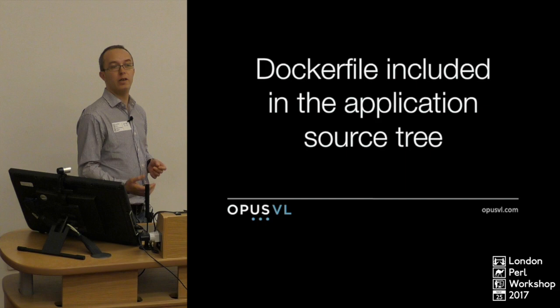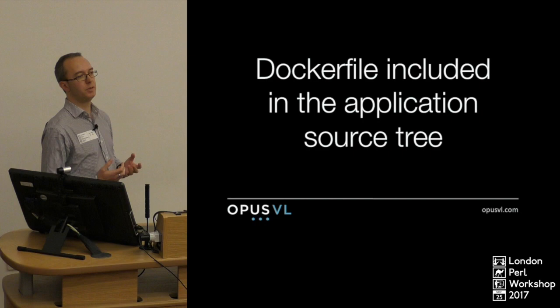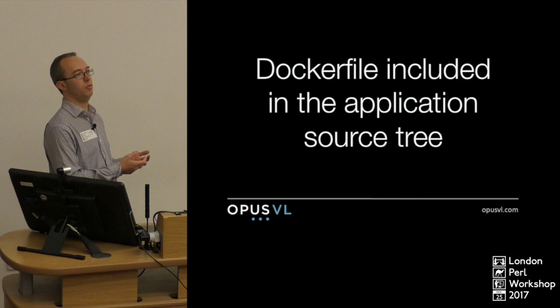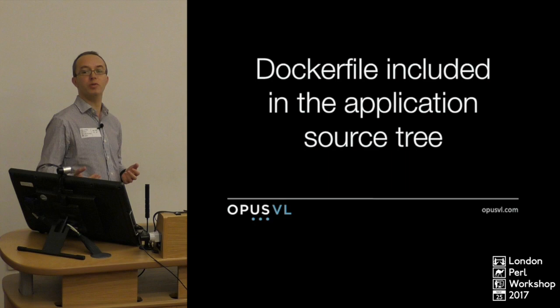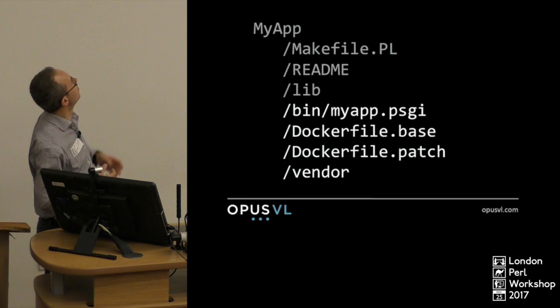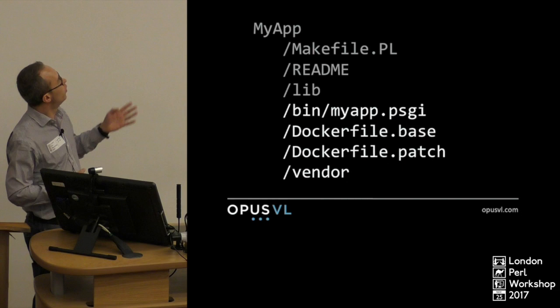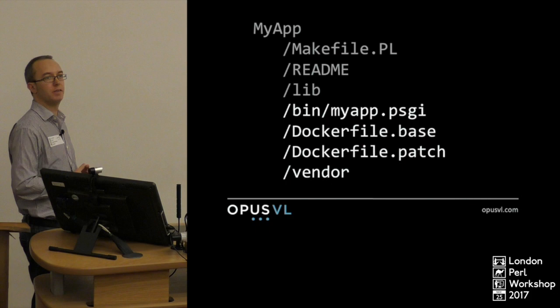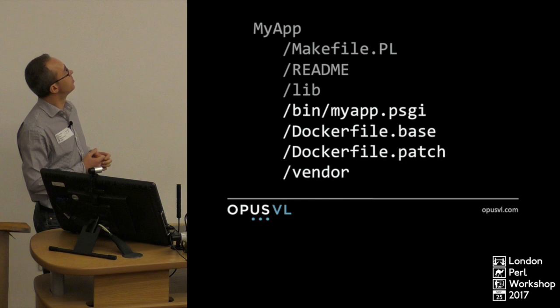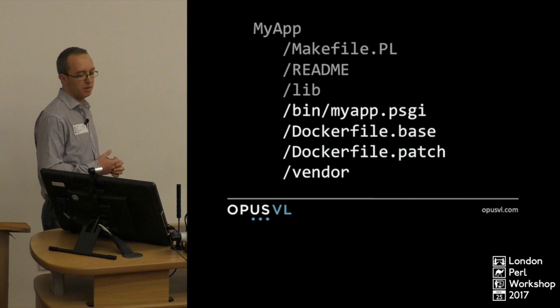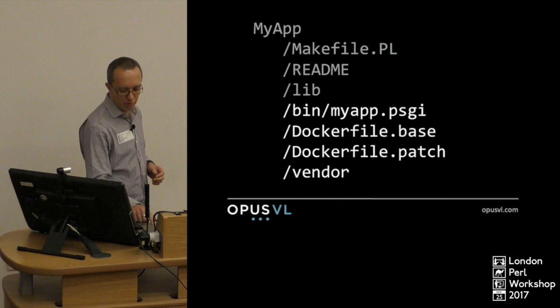Within the application source tree we include a Dockerfile. All our applications are built using a standard CPAN packaging format — we release to an internal local CPAN instance, and open source things go to the public CPAN. A typical module layout has a Makefile, README, lib, and so on. Within bin we have the PSGI file so it gets installed when the module is installed. You'll notice two Dockerfiles — base and patch — and a vendor directory. I'll come back to the vendor directory later, but why do we have two Dockerfiles?